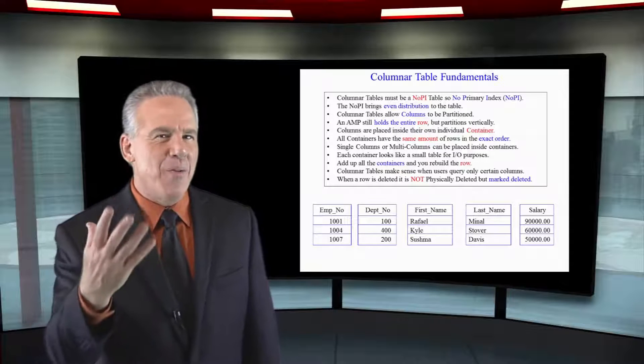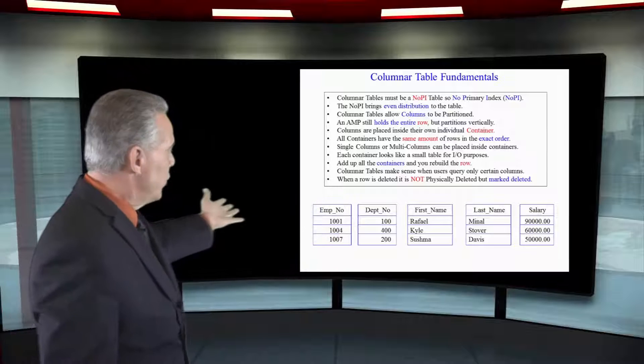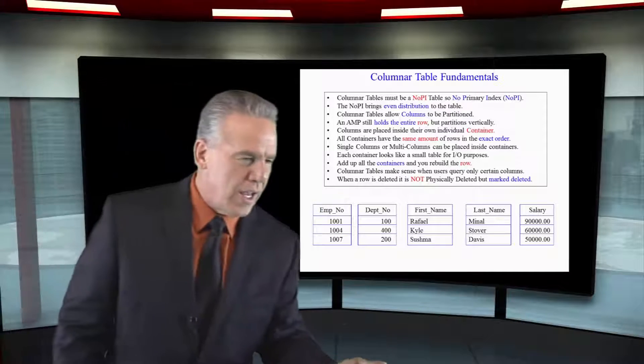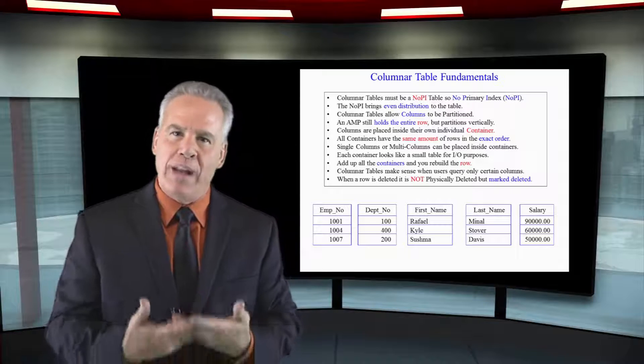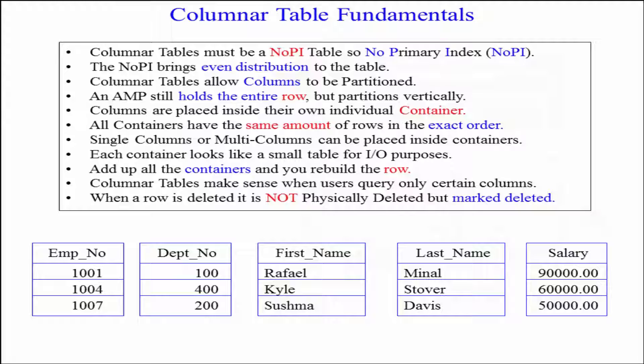Now, let me tell you about what we're really talking about here. We've got our columnar design, five containers, our three rows. If I were to say, how much money does Rafael Manal make? You would say, well, let's see. Rafael Manal, he's the first row in these two containers. He's making 90,000 because that's the first row in that container.